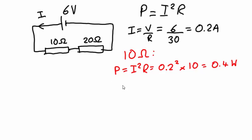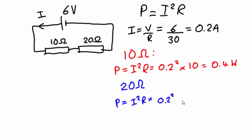Let's do the same now for the 20 ohm resistor. Again we have P equals I squared R. The current is the same through both components, so that will again be 0.2 squared, but this time we are multiplying by 20 because we are interested in the 20 ohm resistance. That will give us a power dissipation of 0.8 watts.